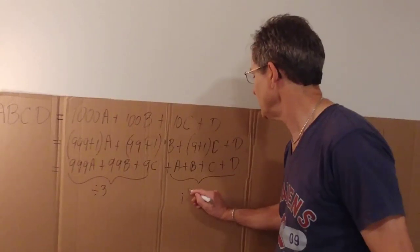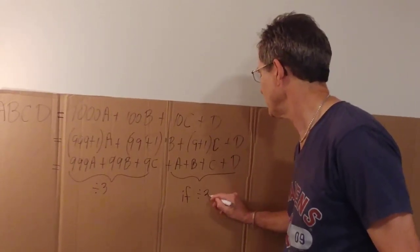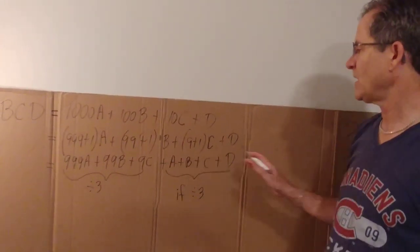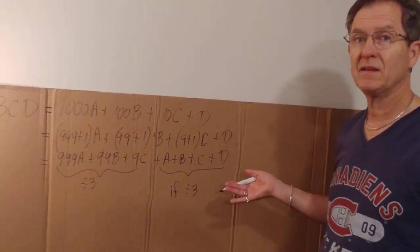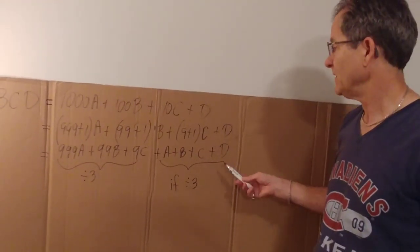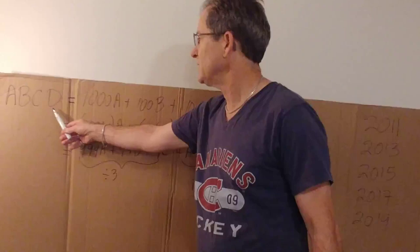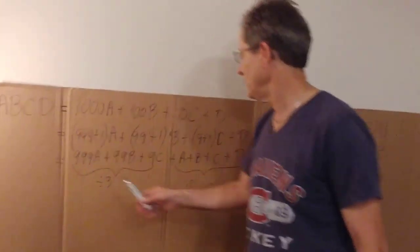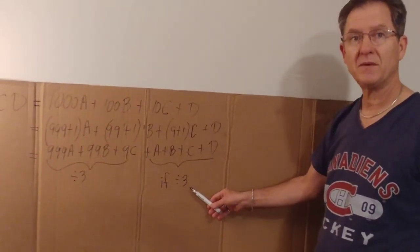So if this is divisible by three and the entire number is divisible by three, that was my claim that this number will be divisible by three if A plus B plus C plus D is divisible by three.